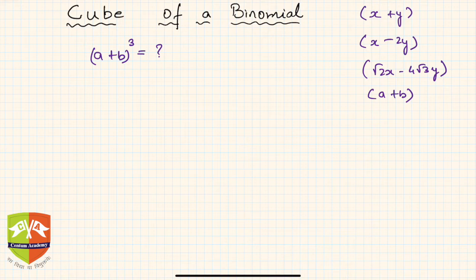Before we start, we must understand what a binomial is — and we already know it. It is of the form x plus y, or x minus 2y: there are two terms in a polynomial, and then we call that polynomial a binomial. So now, what is (a + b)³?